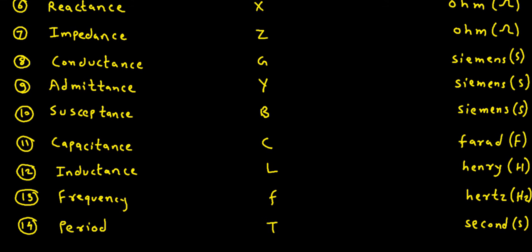Quantity: Capacitance. Symbol: capital C. Basic Unit is Farad, denoted by capital F. Quantity: Inductance. Symbol: capital L. Basic Unit is Henry, denoted by capital H. Quantity: Frequency. Symbol: small f. Basic Unit is Hertz, denoted by Hz. Quantity: Period. Symbol: capital T. Basic Unit is second, denoted by small s.